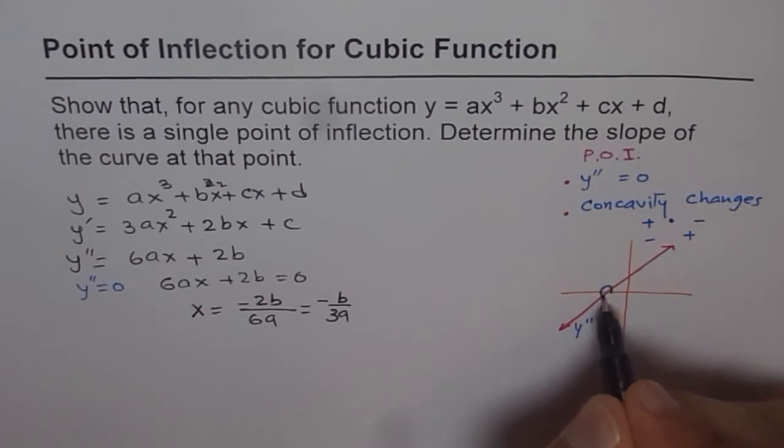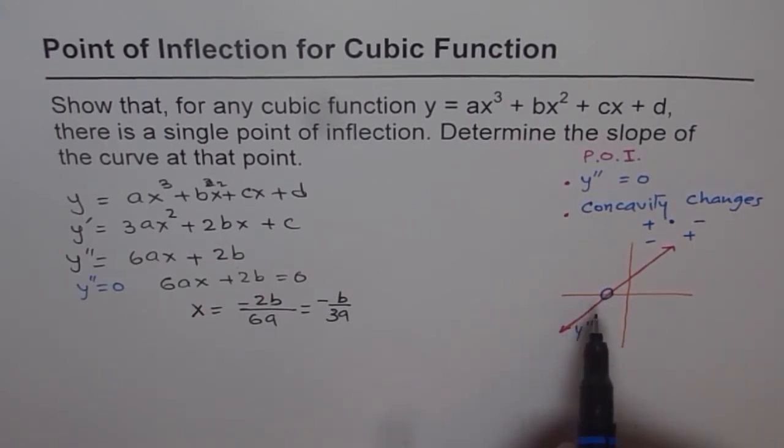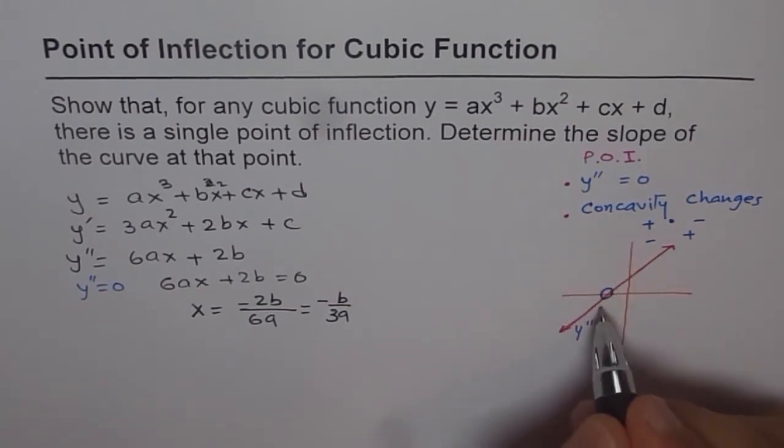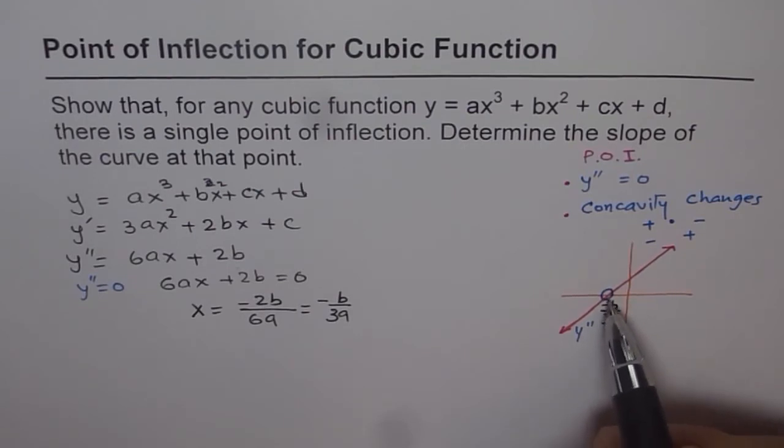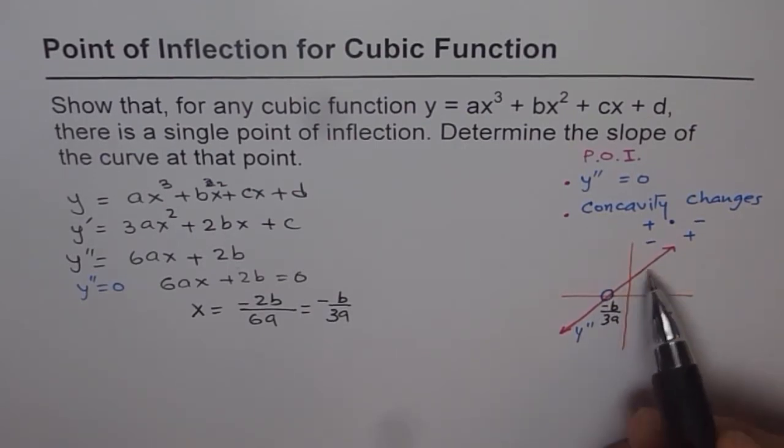Let me just make a line with different ink. So we have this line for us. Let us say this line represents y double dash. We are talking about that particular point, and we say this point is minus b by 3a.